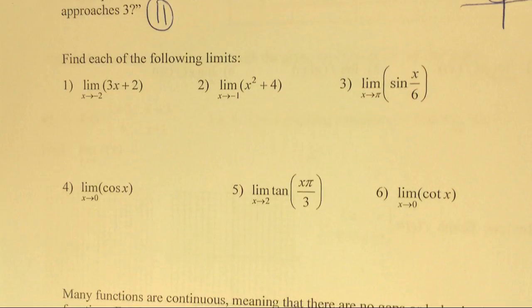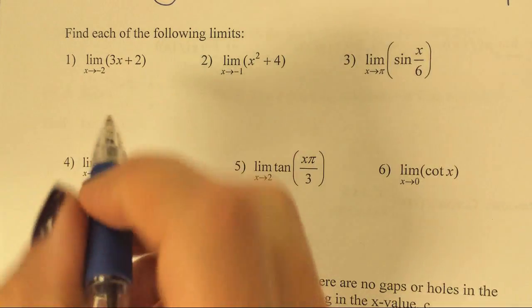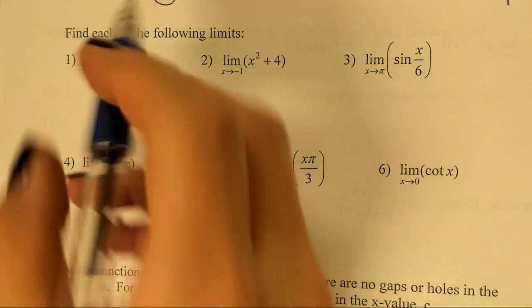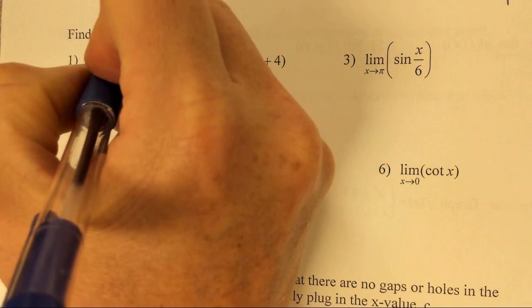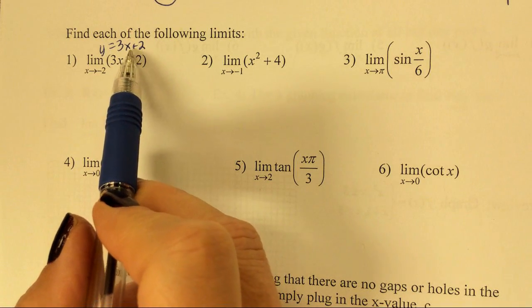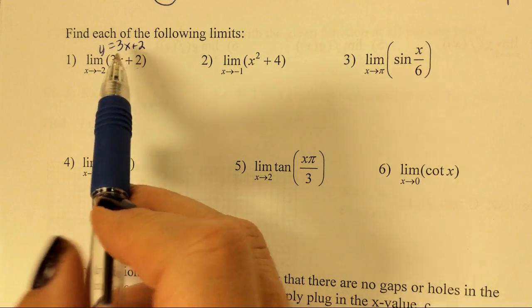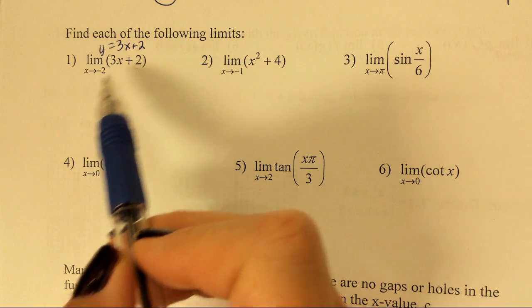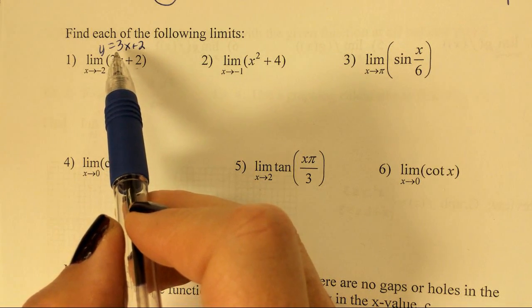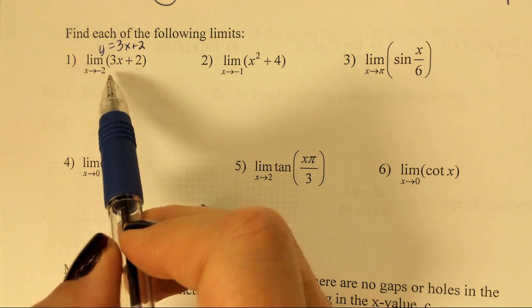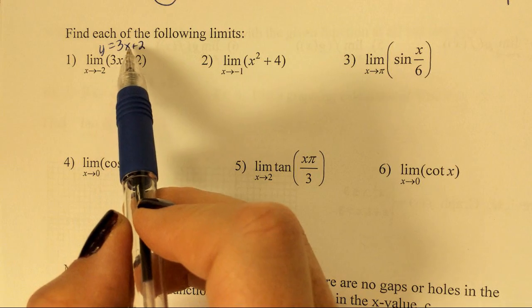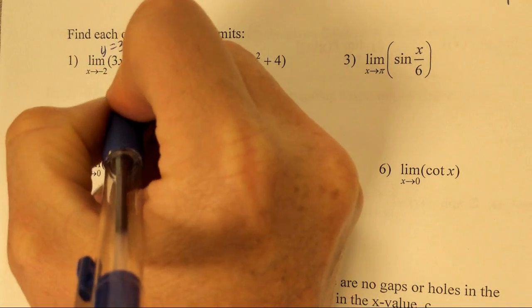So we're going to find each of the following limits. First of all, we should look at the function. This is representative of the function y equals 3x plus 2. Is it going to be continuous? Continuous means I can draw that function without lifting my pen. That's a linear function, so yeah, I can graph that. So I'm allowed to just substitute in the number 2. 3 times 2 is 6 plus 2 is 8.